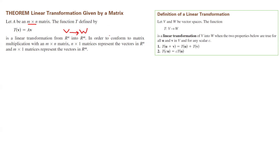The proof should be straightforward. You can take a general m by n matrix and verify that T(u + v) = T(u) + T(v), and that T(cu) — scalar multiplication — equals c·T(u). Take a look at the previous example we did in class to get an idea of how to write the proof.